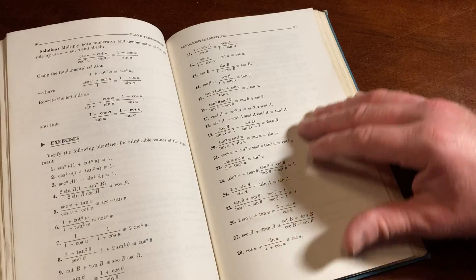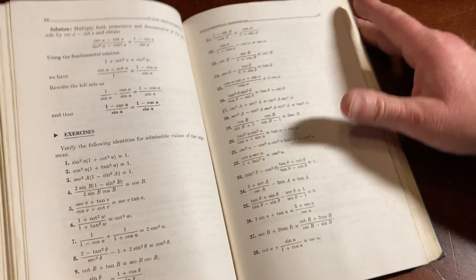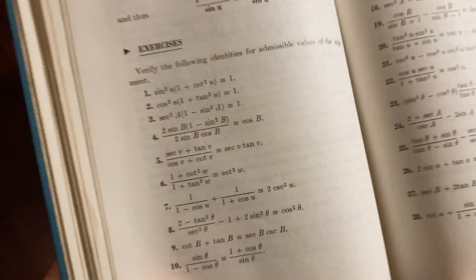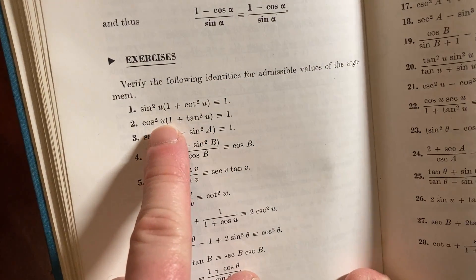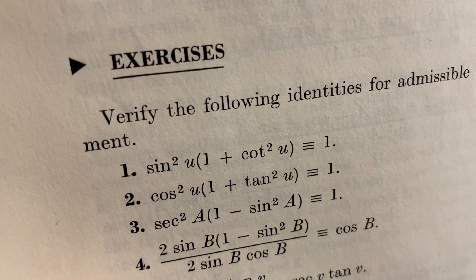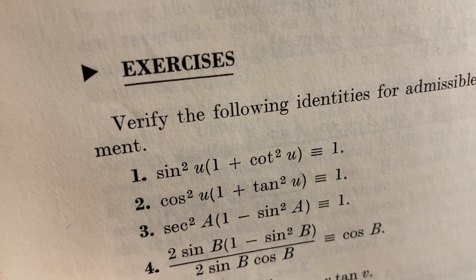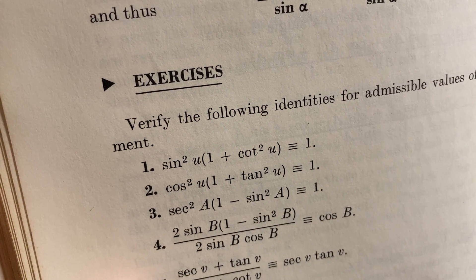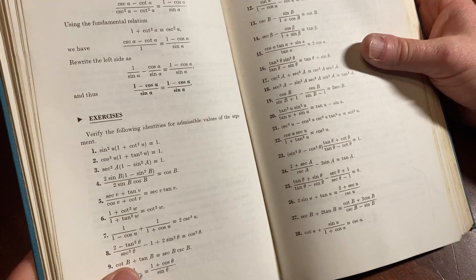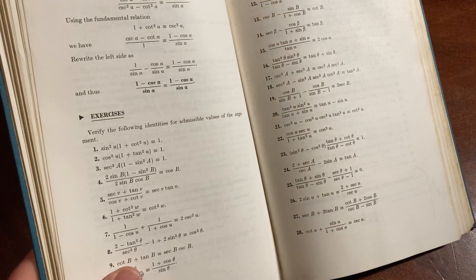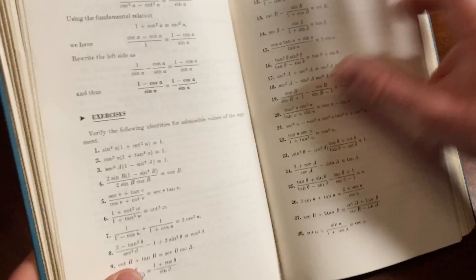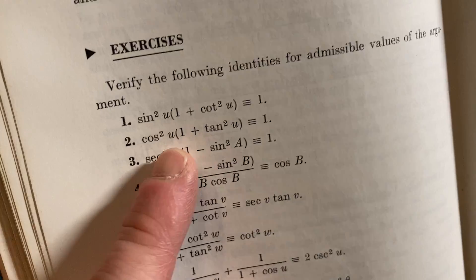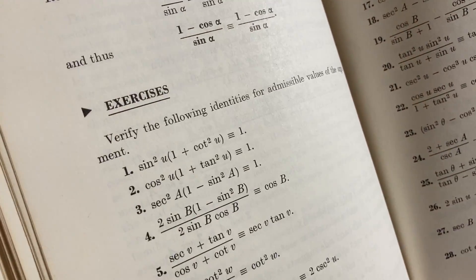People struggle with trig a lot more than they do with pre-calc. Here's an example of something that people really struggle with in trig is these identities. Basically you start with one side and you have to show it's equal to the other side. So like for example, here you would start with sine squared times one plus cotangent squared, and then you have to show that is equal to one.